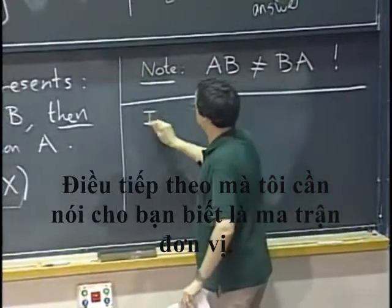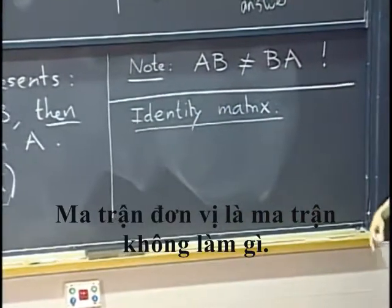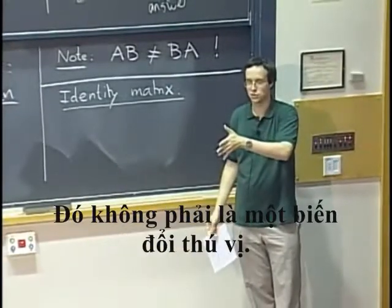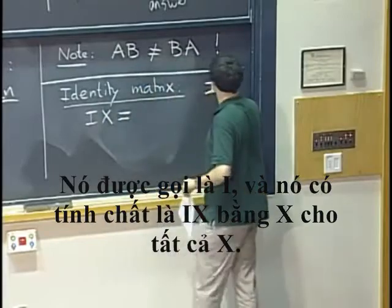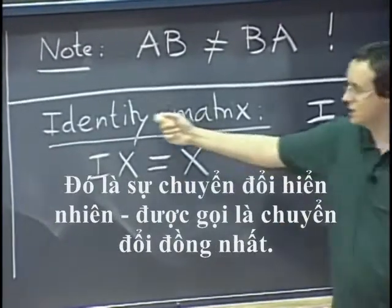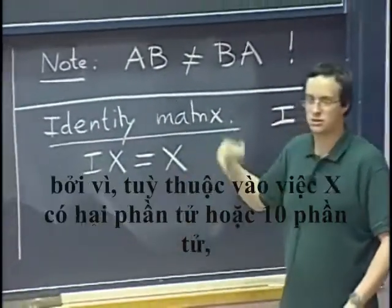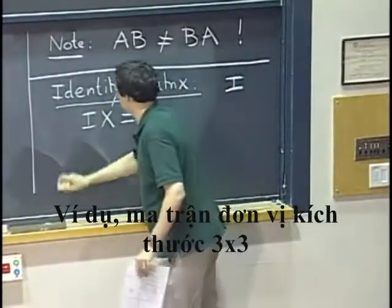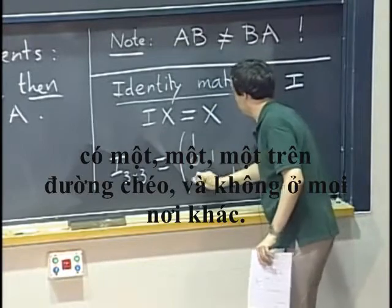The next thing is something called the identity matrix. The identity matrix is the matrix that does nothing — not the zero matrix, which would take X and always give back zero. What I mean is the matrix that takes X and gives you X again. It's called I, and it satisfies IX equals X for all X. It's the obvious transformation called the identity transformation. There is an identity for each size: the identity matrix of size three by three has ones on the diagonal and zeros everywhere else.